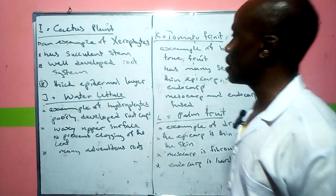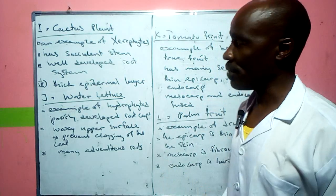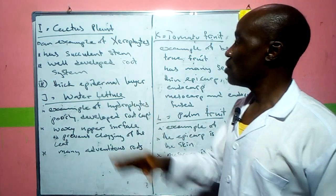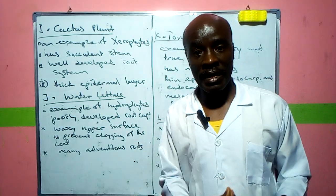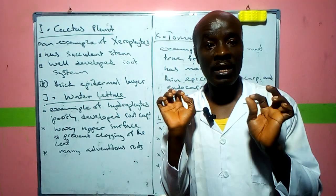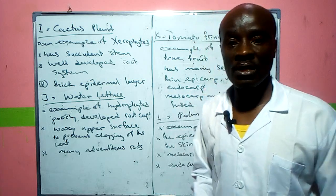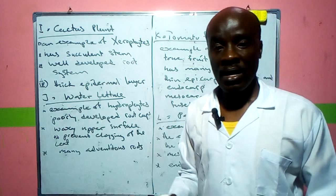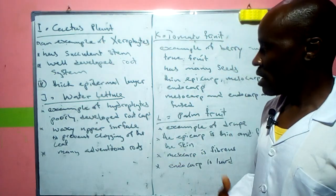A cactus plant is an example of a xerophyte — plants that survive in the desert, that is, dry areas. Adaptations of the cactus include: a succulent stem that stores water, leaves reduced to spines to reduce water loss, a well-developed root system that goes deep into the ground to access water, and a very thick epidermal layer.